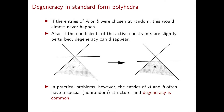These two observations suggest that maybe degeneracy is not so important because it essentially never happens. However, degeneracy is much more important than it seems. In practical problems, the data A and B is definitely not chosen at random and always has a very special structure coming from the real-world problem, and it turns out that this structure often leads to degeneracy. So in practice, degeneracy is very common.